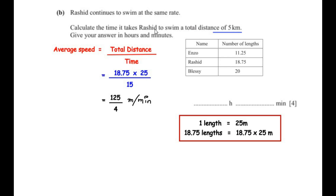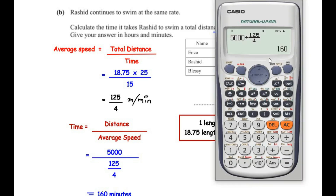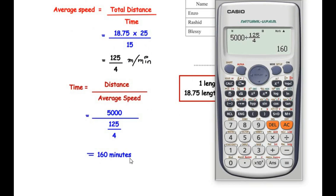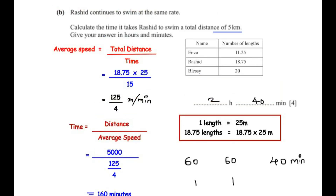We need the time to swim 5 kilometers, so we rearrange to time equals distance over speed. Converting 5 kilometers to 5000 meters and dividing by the speed of 125 over 4, we get 160 minutes. Breaking this down: 60 plus 60 plus 40 minutes gives us 2 hours and 40 minutes as the time taken by Rashid to swim 5 kilometers.